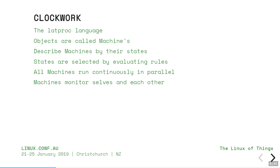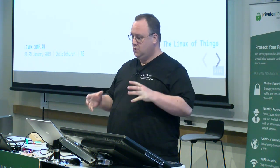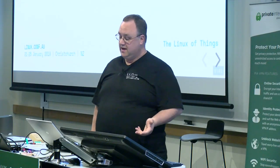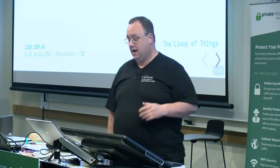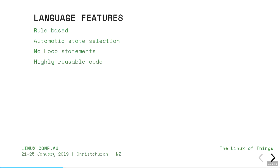Clockwork is the language we use in LATPROC. It's based on modelling of your actions, not step-by-step instructions like normal languages such as C and Python. You describe the state of something: a door is open, a door is closed, maybe it's opening or closing. Programming is more like connecting pieces of state machines together to create a set of actions. We think of sequences as changes between states, not steps from one action to another. The language is rule-based with automatic state selection, no loop statements, and very high code reusability.